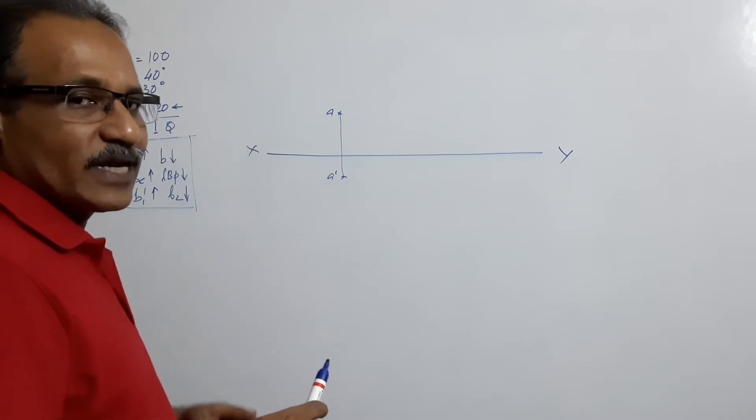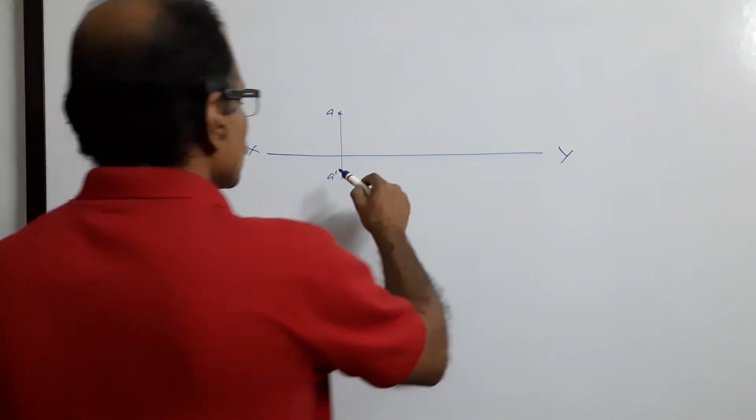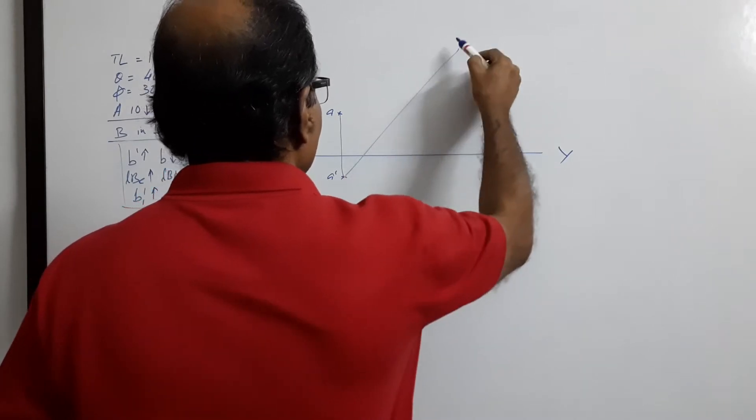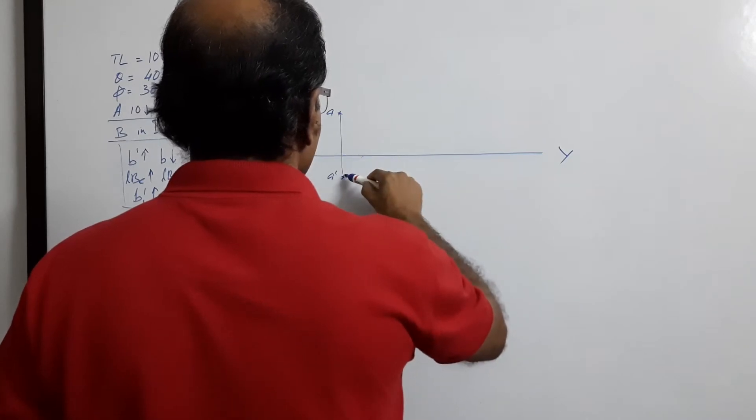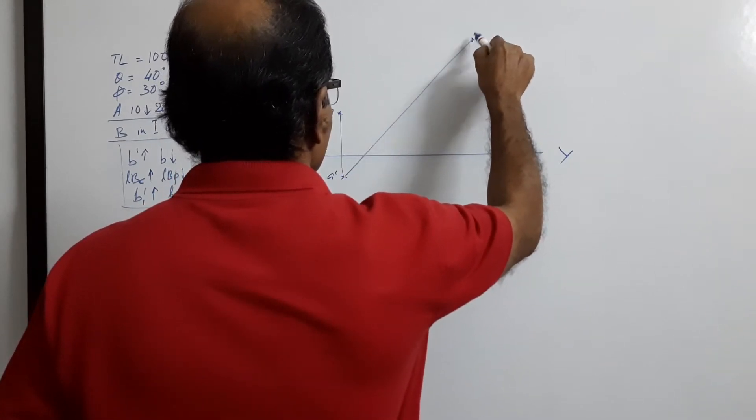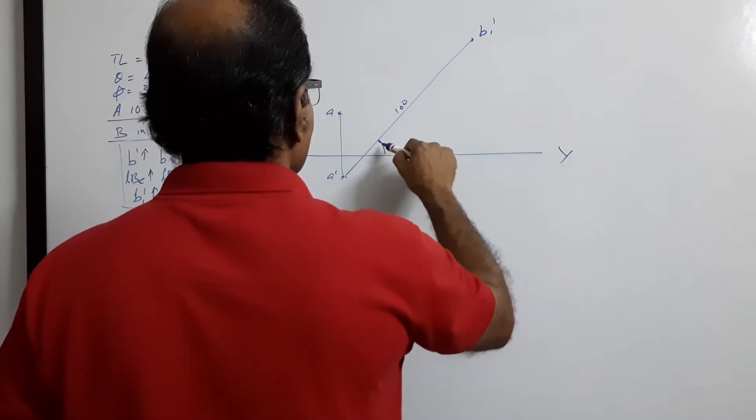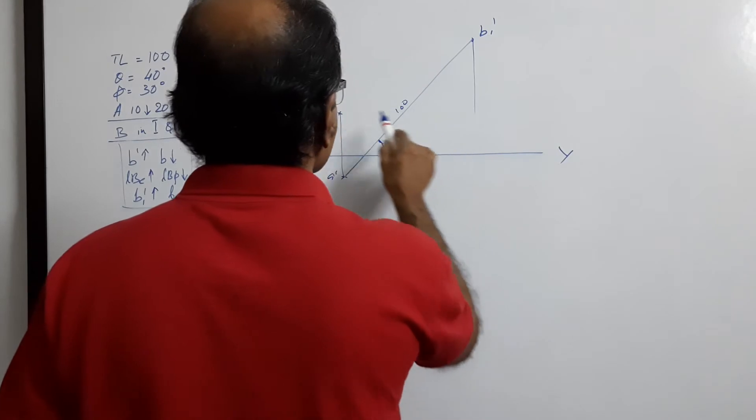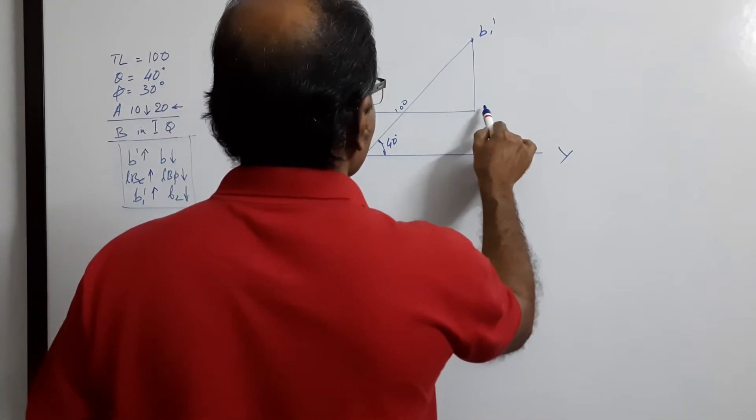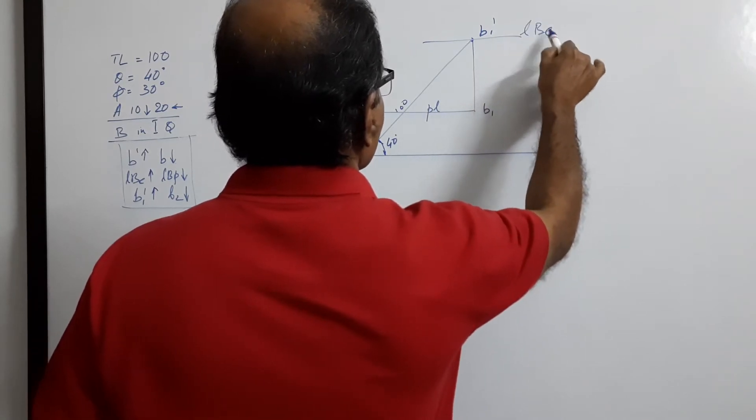Assuming the line is parallel to VP, we have to draw the elevation. Since end B is in first quadrant, at A dash draw a 40 degree line. Mark B1 dash at 100. Drop a projector and draw a horizontal line through A. You get B1 plan length LBE.